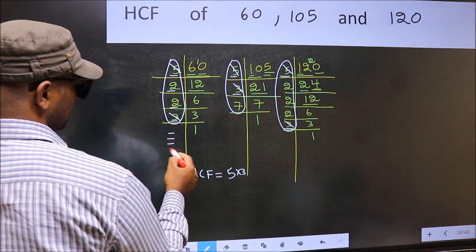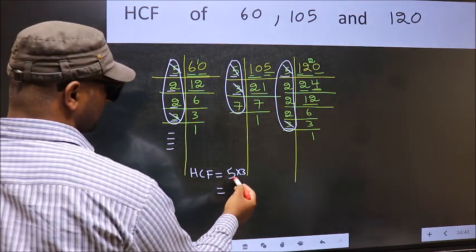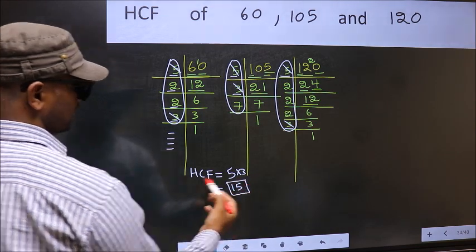No more numbers have been left out. So our HCF is 5 into 3. 15 is our HCF.